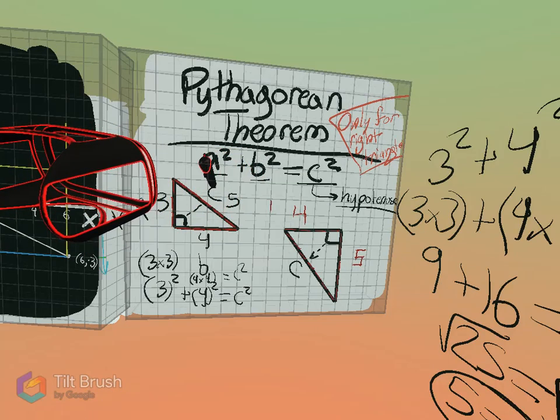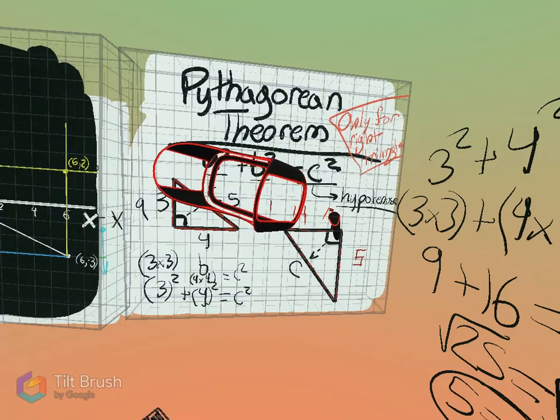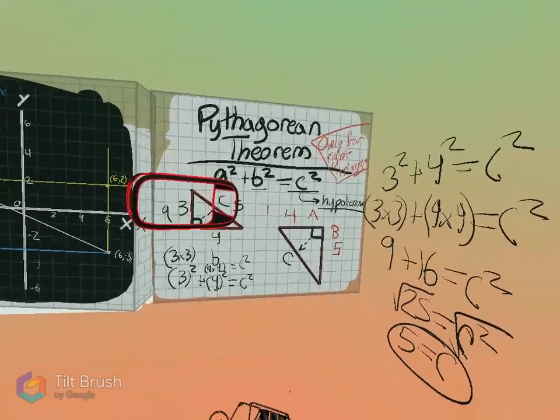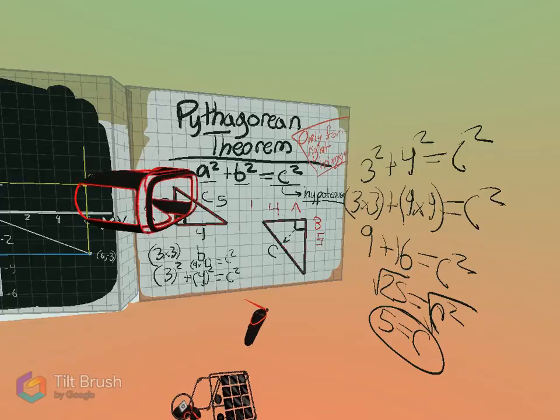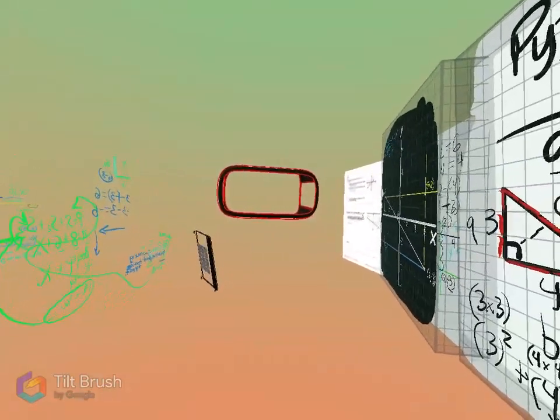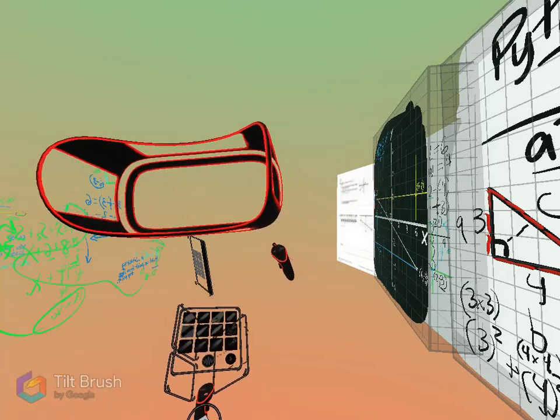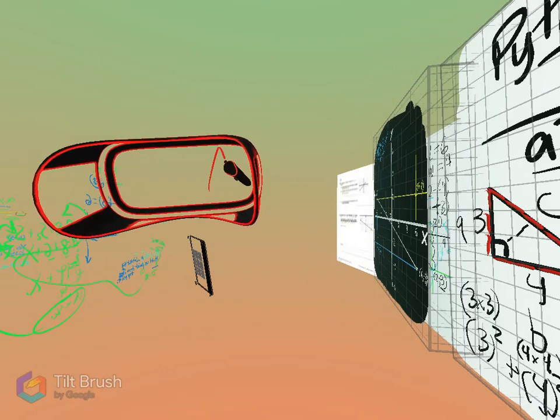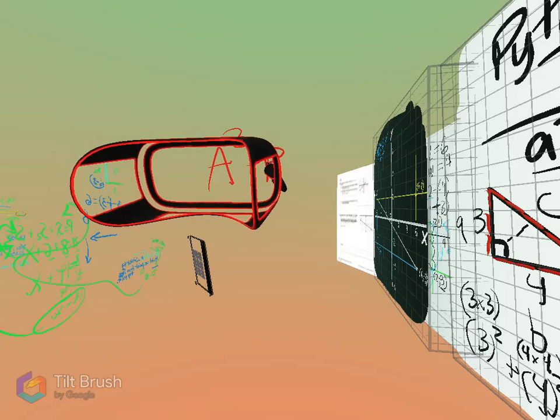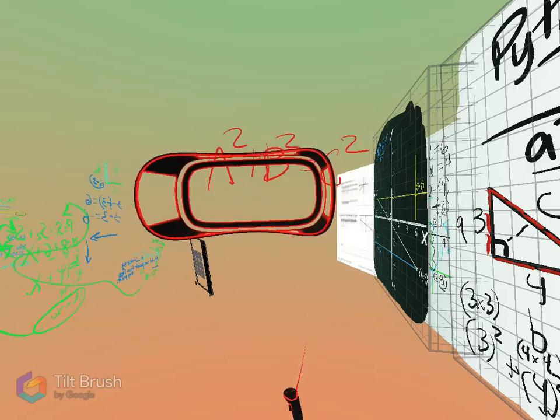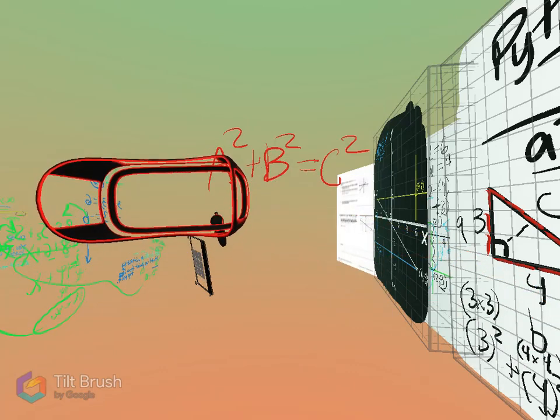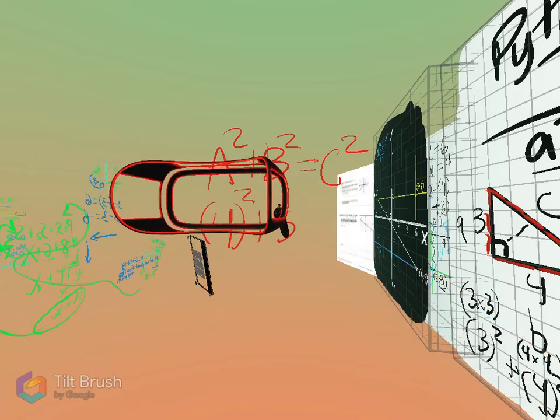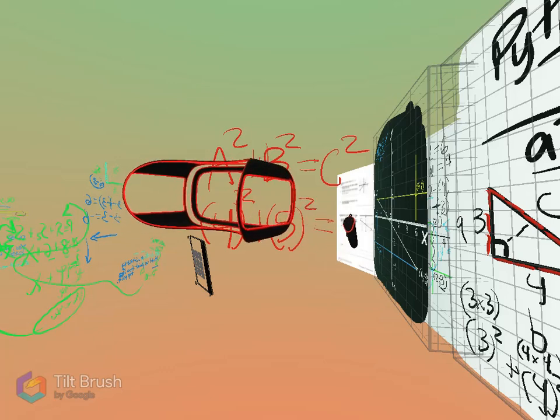Like this. And again, this is our formula. Pythagorean theorem. A squared plus B squared equals C squared. This side we'll call A. This side we'll call B. And this side we know is C. So let's write it out. A squared plus B squared equals C squared. And our A in the problem is four. So four squared plus B squared is five. Equals C squared.